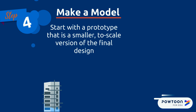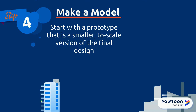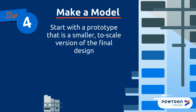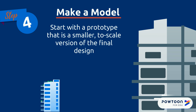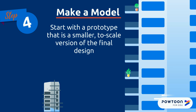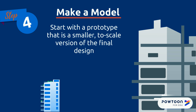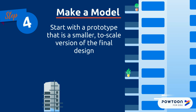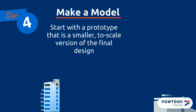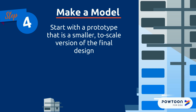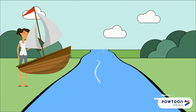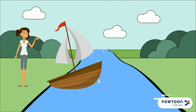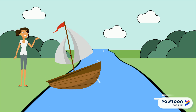Step four of the engineering design process is to make a model. This is when you'll use your design and list of materials to make it in real life. Usually engineers will start out with a prototype, which is a smaller, to-scale version of the final design, in order to save materials, money, and protect safety. Since Maddie needs the design right away, she went right to creating a full-size model of her boat.